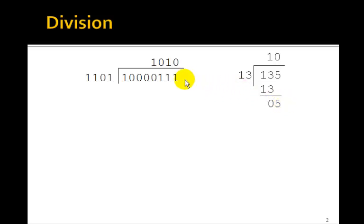Let's see how to do that in binary. You do long division the same way. Here's the 13: 1101. And here is binary 135: 10000111.